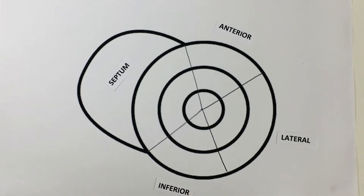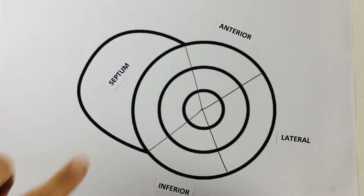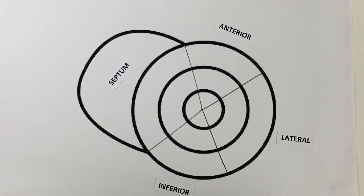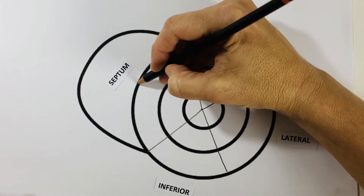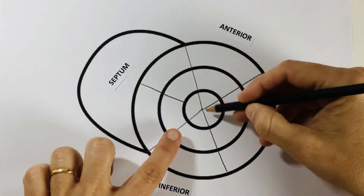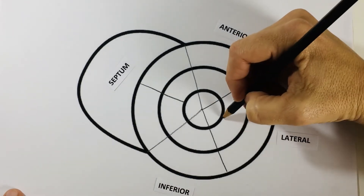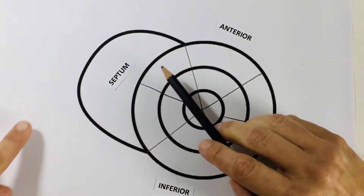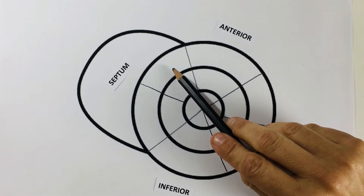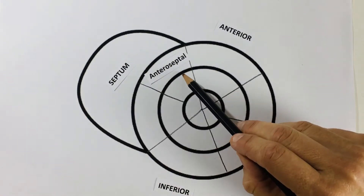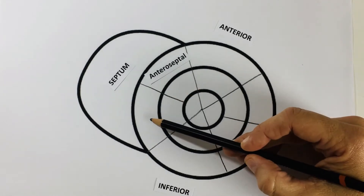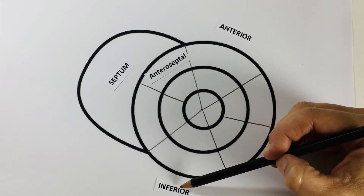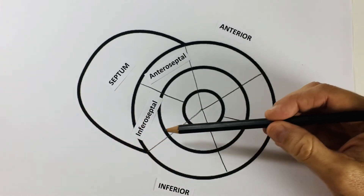The wall opposite the anterior wall, resting on the diaphragm, is called the inferior wall. It just so happens that the coronary arteries don't follow this four-segment approach, and so we really need to divide the septum and the lateral wall again. Let's divide the base and the mid of the septum — the apex is too small to divide. This part of the septum closest to the anterior wall is going to be called the anteroseptal wall. The part closest to the inferior wall will be called the inferoseptal wall.